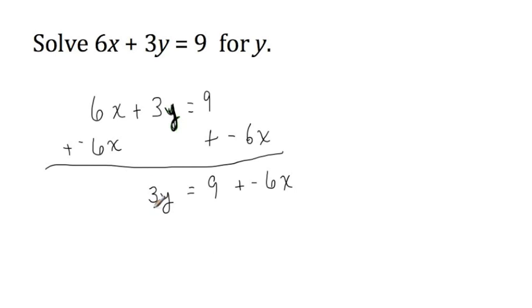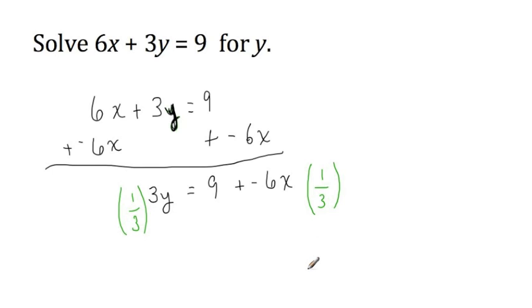Next, since we've gotten rid of all terms without the variable, now we have to get rid of the coefficient. The step we use is to multiply both expressions by the reciprocal of the coefficient. The coefficient of y is 3, so we multiply both expressions by the reciprocal of 3, which is 1 third. Look at the right-hand expression — there are terms being added, so we need to put the expression in parentheses in order to distribute the 1 third to the entire expression.